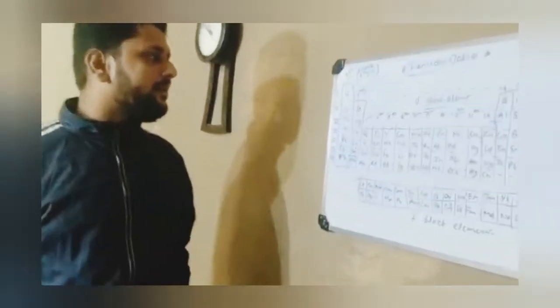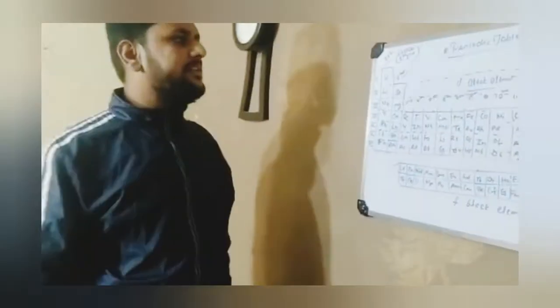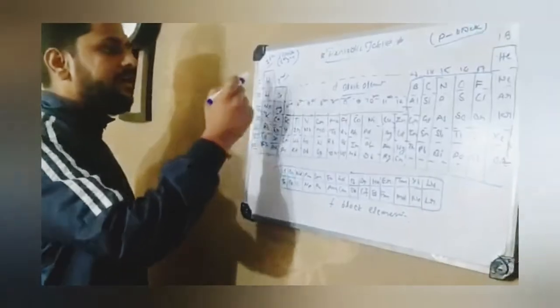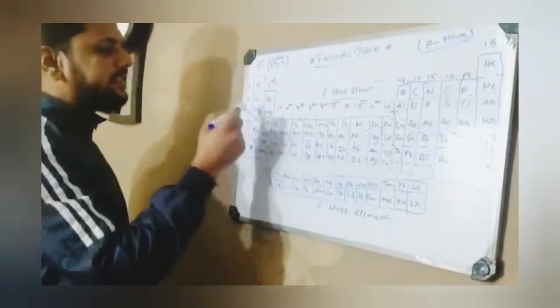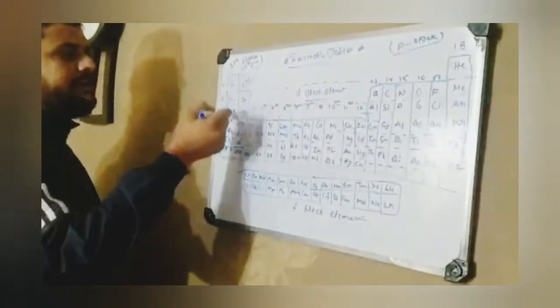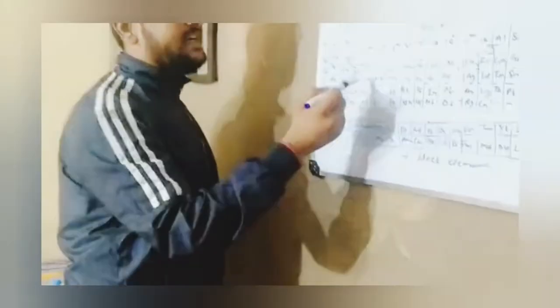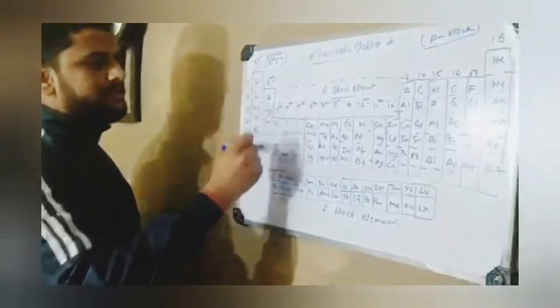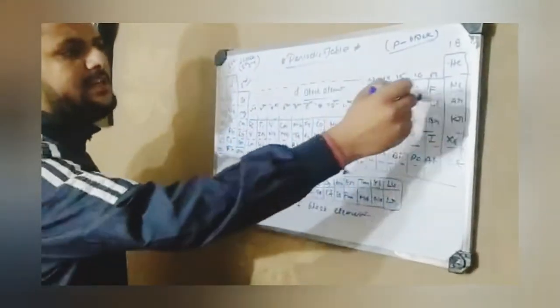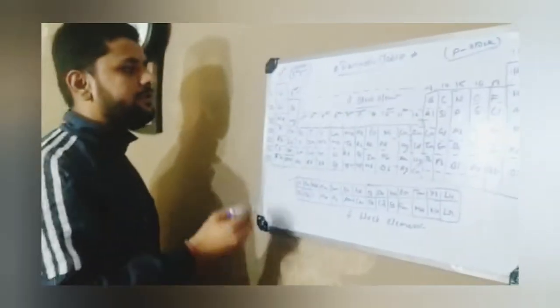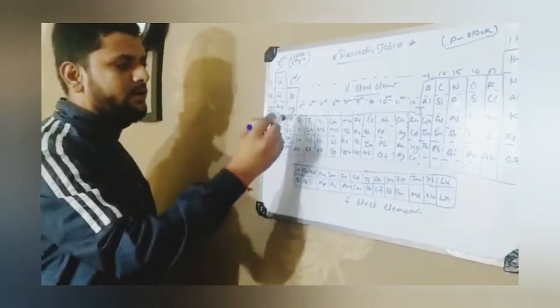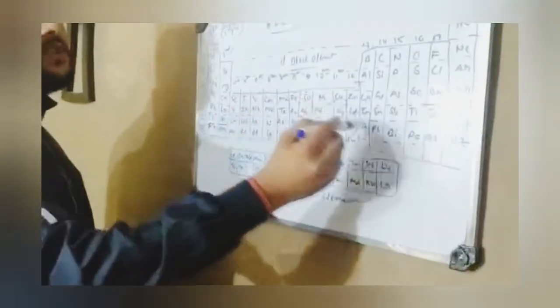We are going to discuss the periodic table, and this periodic table consists of 18 groups. You can see here, there are 18 groups. These vertical columns are known as groups - this is first group, second group, third group, fourth group, fifth group.